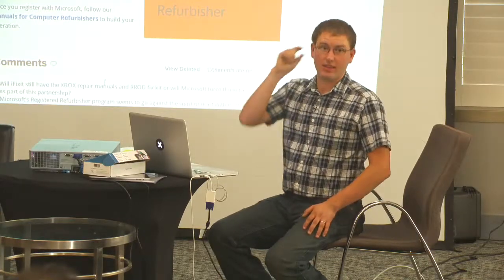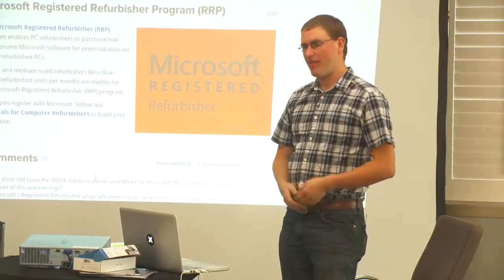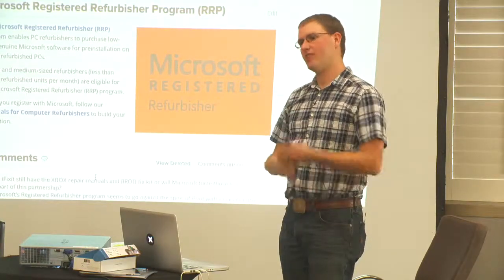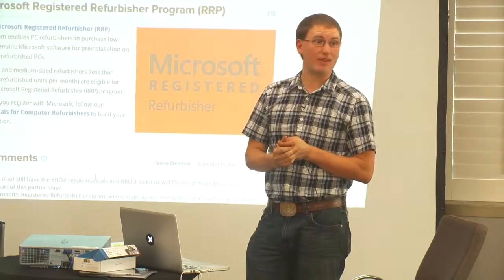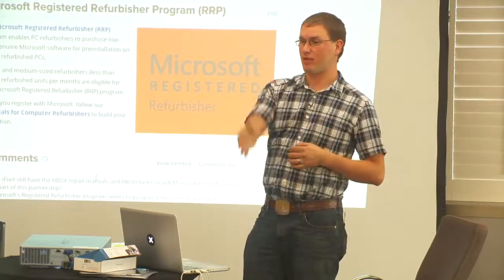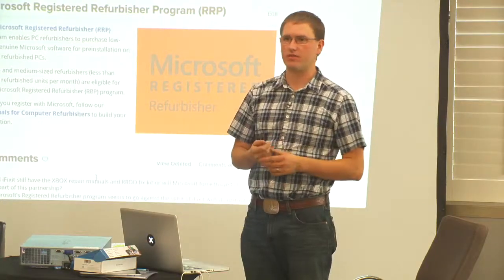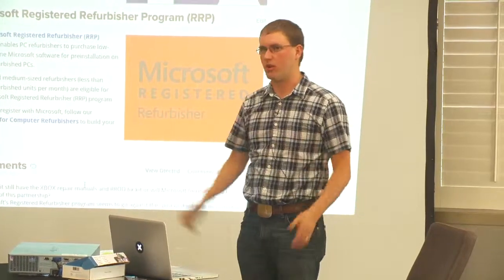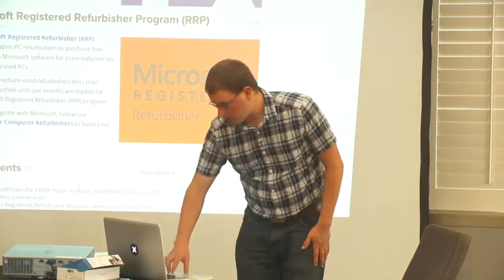We've got information on getting going on the Microsoft Registered Refurbisher Program. You have to sign up, take the test, get approved, then go to a reseller and get approved with them, order your licenses, and receive them. Beginning to end, signing up for the RRP program took about a month — from deciding to take the test to getting the first licenses in the mail. Once you get them, they're very low cost. It's not anything crazy hard, just not as simple as filling out a web form. That's my overview of the Business School Kit.